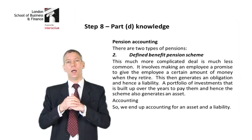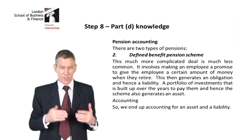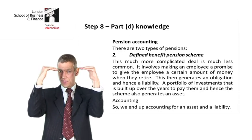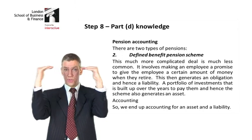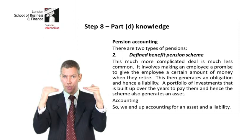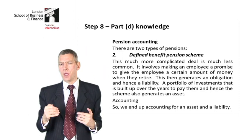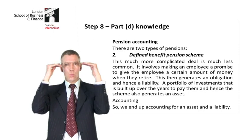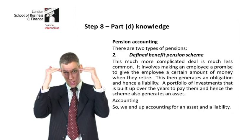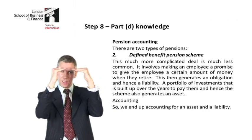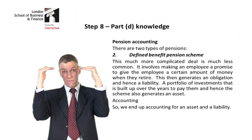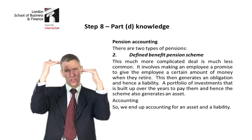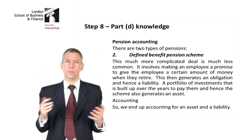A defined benefit pension scheme is the combination of an asset and a liability. It's driven by the liability, but we have an asset which we try to match to the liability. The truth is they're separate. The liability normally goes up, and as people retire it goes down. One tries to keep the asset at roughly the same value as the liability, but both can change all over the place, so getting them exactly matched up is almost impossible in real life.